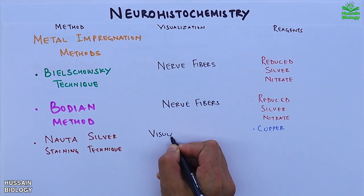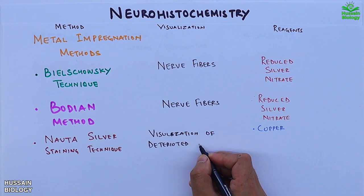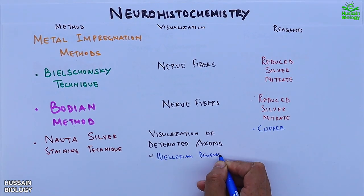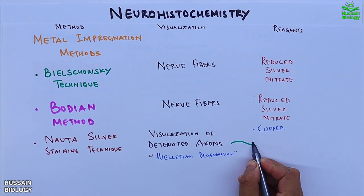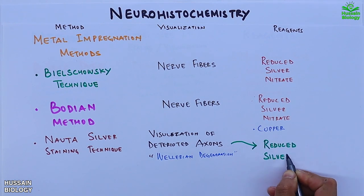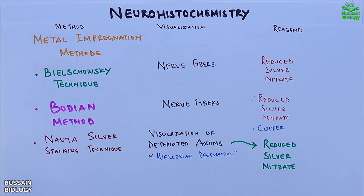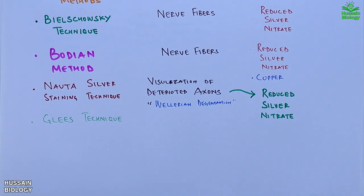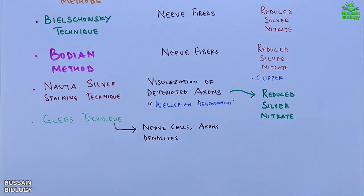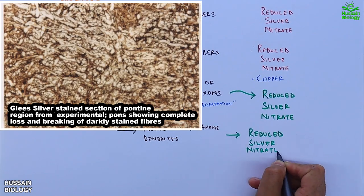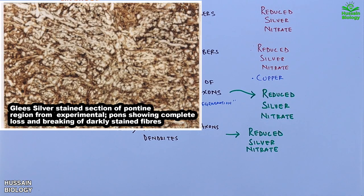The third is the Nauta silver staining technique, which is used to visualize deteriorated axons, such as in cases of Wallerian degeneration, using reduced silver nitrate as a reagent. The fourth is the Glees technique for visualization of nerve fibers, axons, and dendrites, also using reduced silver nitrate as a reagent, as shown in the diagram.